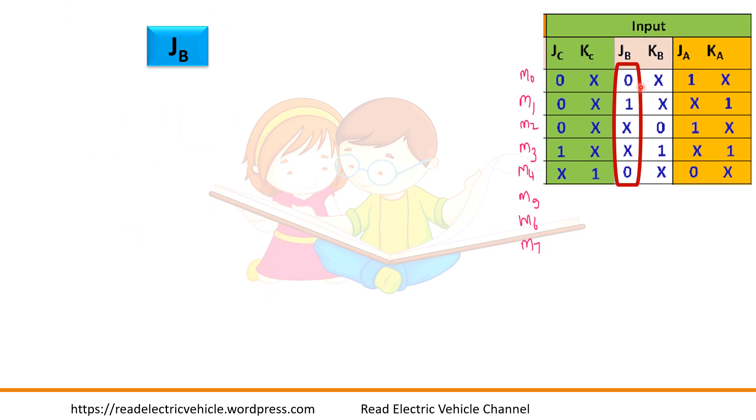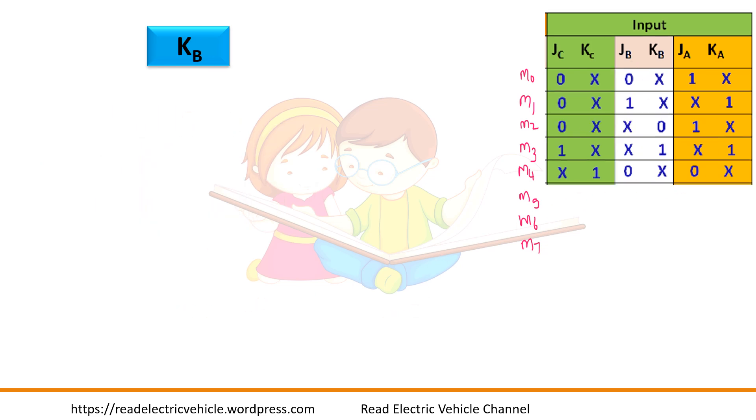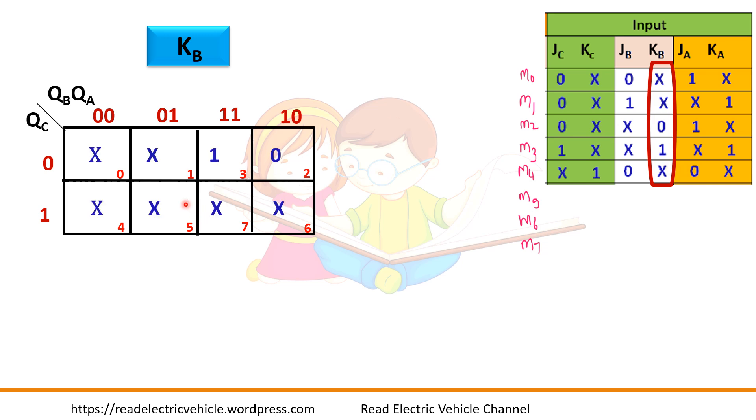Next for JB. m1 is 1. m0 is 0 and m4 is also 0. Remaining things are don't care. So you can combine all the 4 together. So what is the common term here? It is QA. So JB is equal to QA. For next KB, m3 is 1. So you can combine all these 4 together again. KB equal to QA.